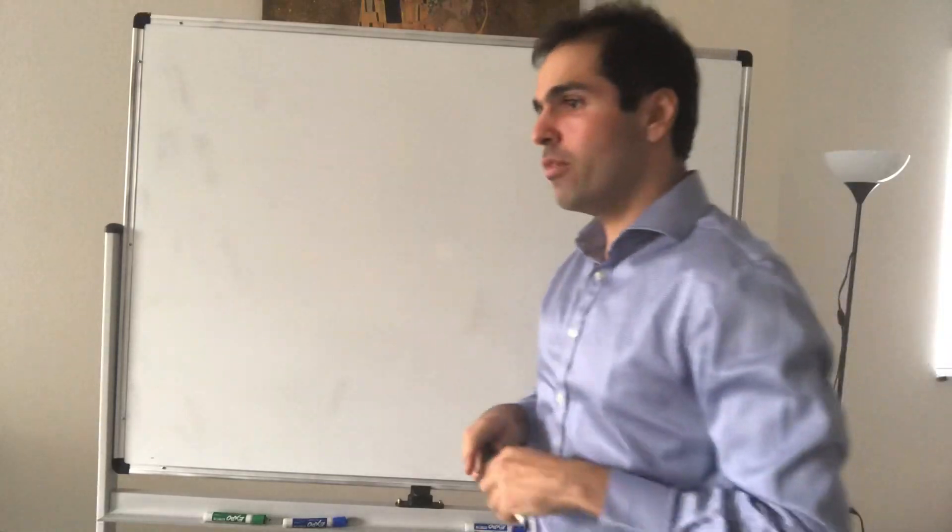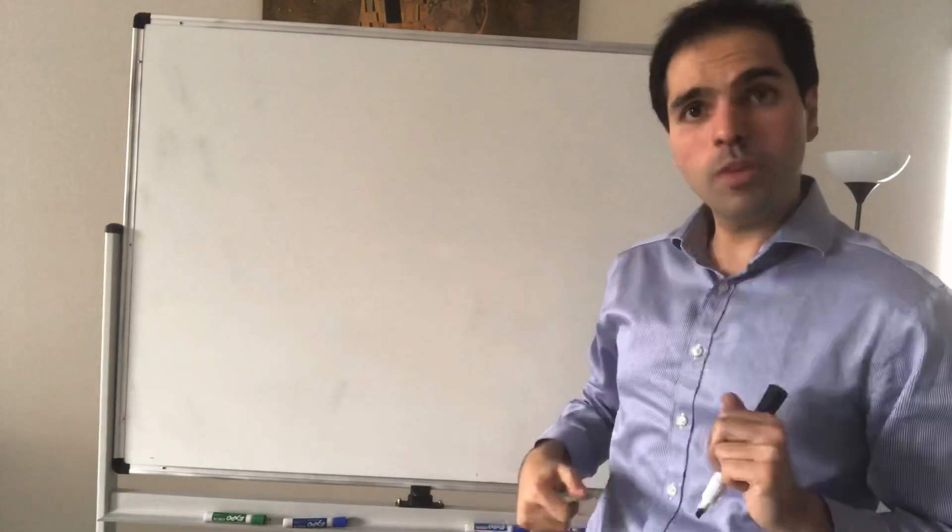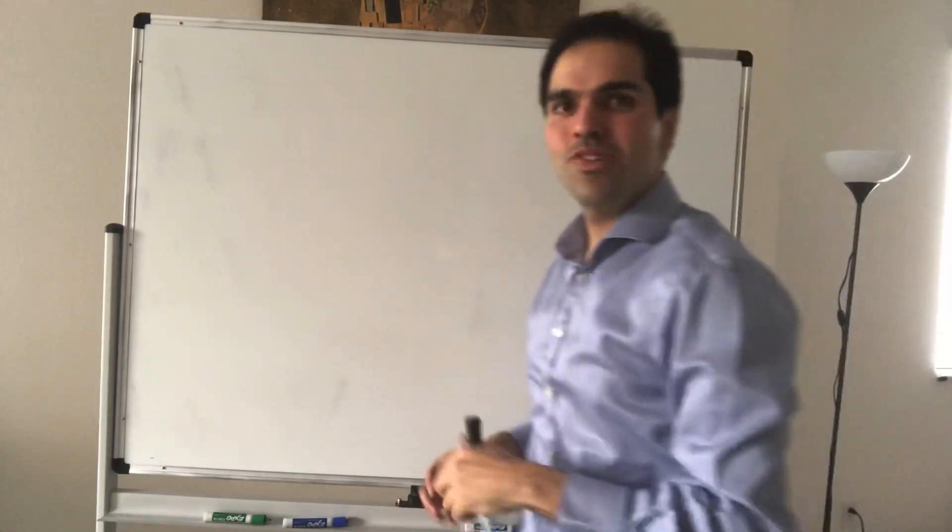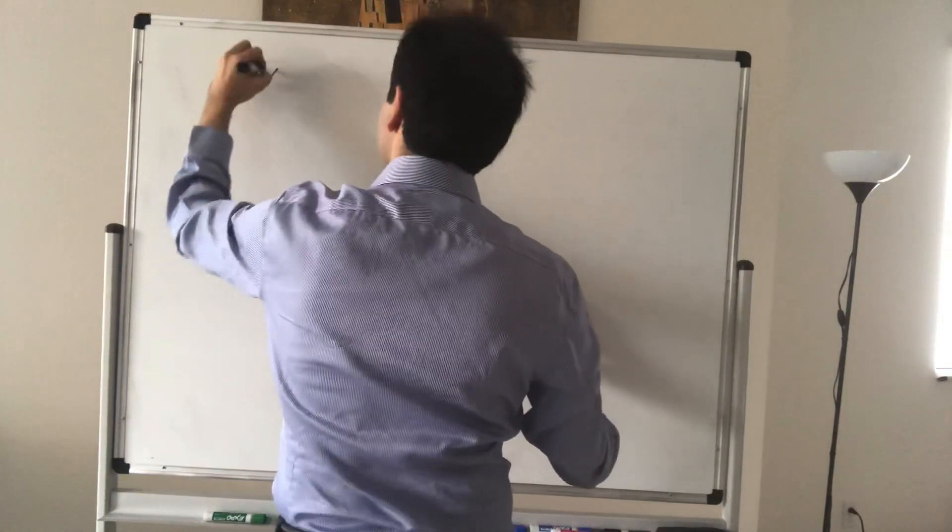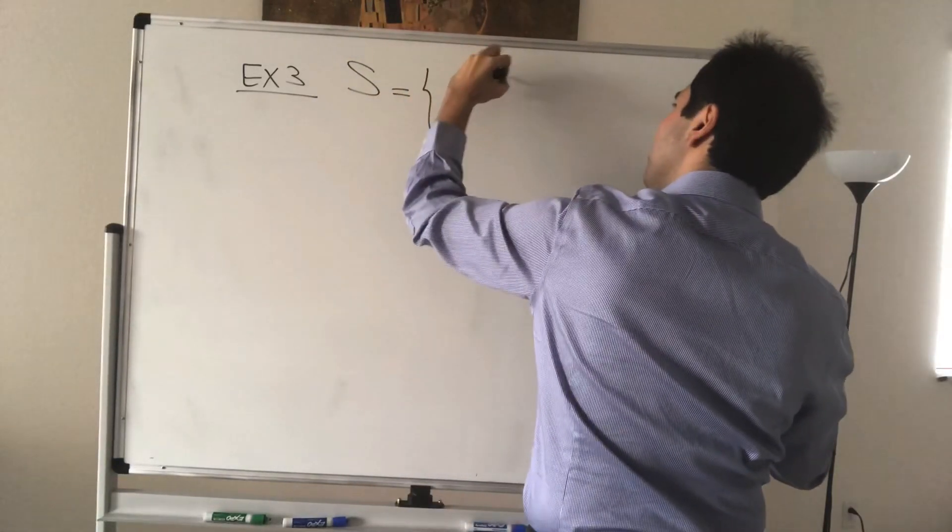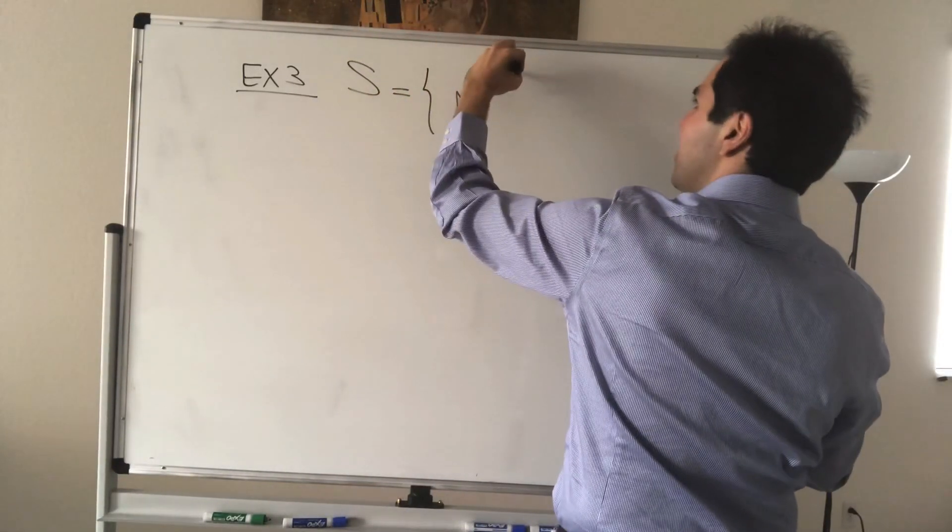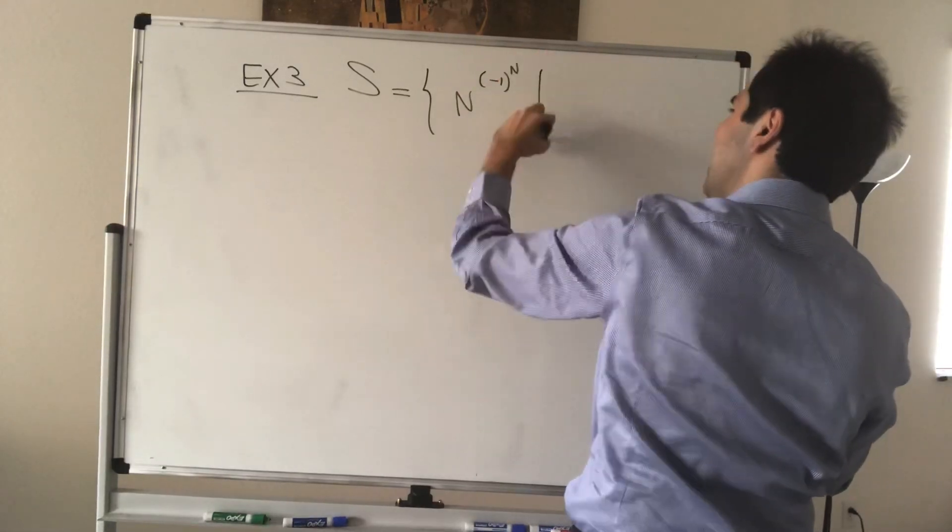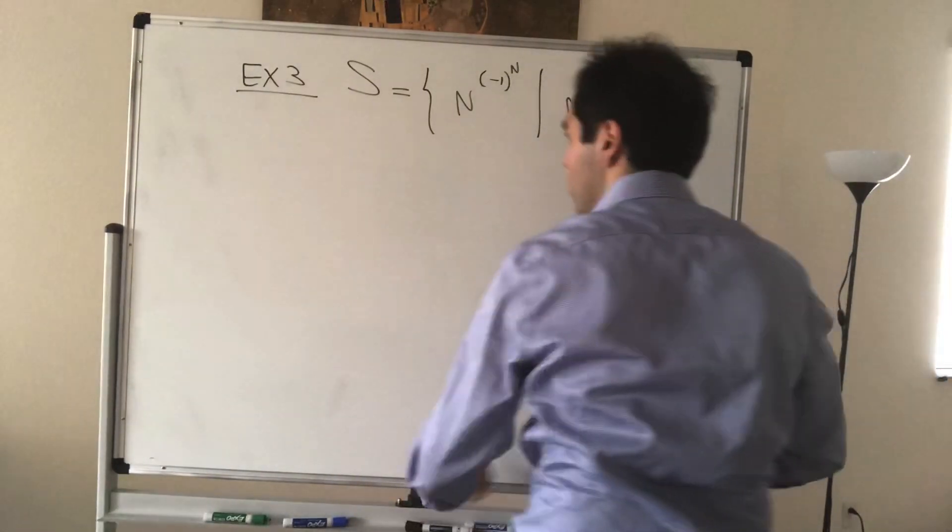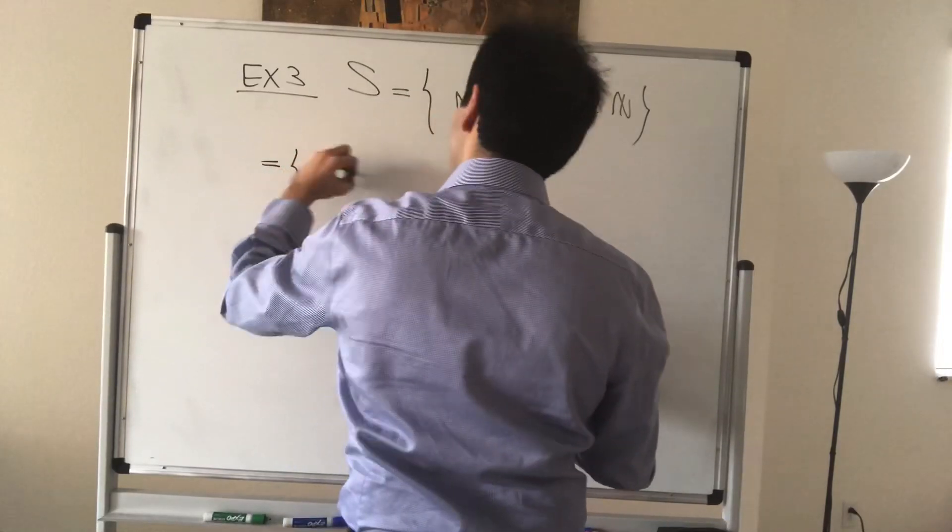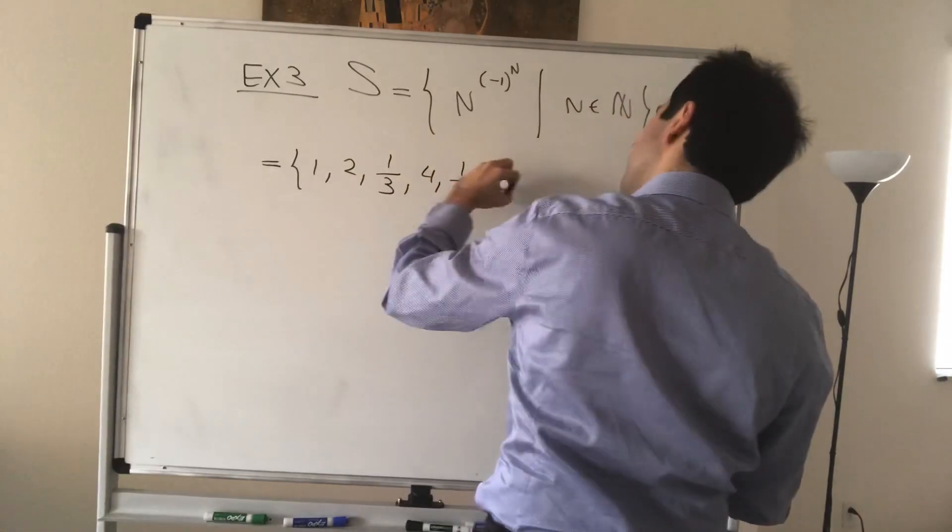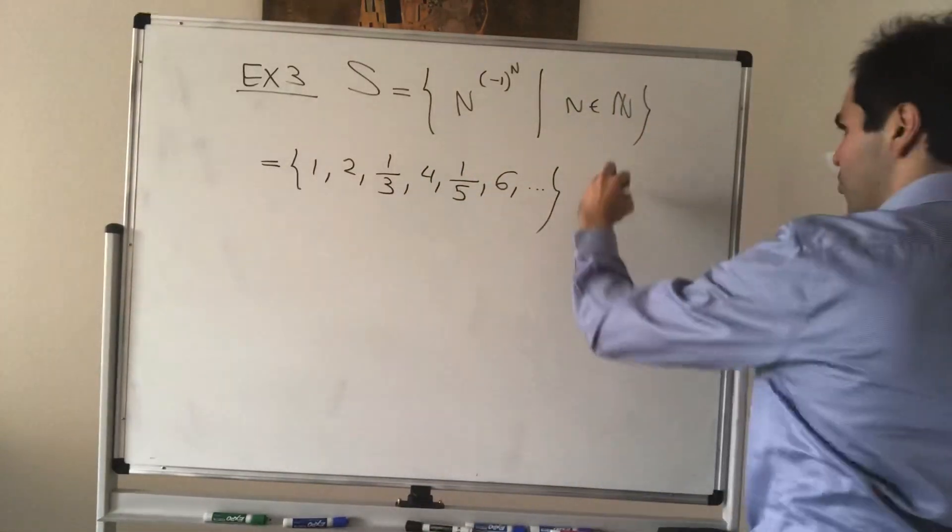Last but not least, there's one more example I want to talk about, which I talked about a couple of videos before that, which is the one with the sequence that just goes up and down, so N to the minus 1 to the N. So, let S be the set of numbers, or the set of elements of the form N to the minus 1 to the N, where N is a natural number. And again, it's just the set, if you want: 1, 2, 1/3, 4, 1/5, 6, 1/7th, etc.